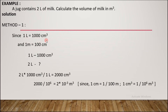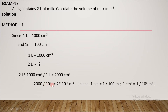We know 1 m = 100 cm, so 1 cm = 1/100 m. Therefore, 1 cm³ = (1/100)³ m³ = 1/10⁶ m³. So 1 cm³ = 10⁻⁶ m³. This is the key conversion we need.